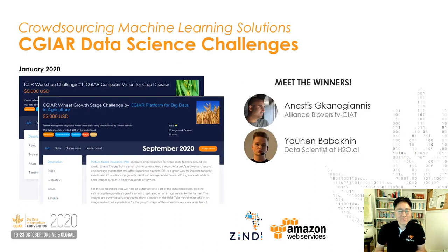One of the new areas we explored this year was the use of an open data science competition platform. In partnership with ZMD and Amazon Web Services, we launched two machine learning challenges: one for identifying crop disease from pictures, and the second on the identification of crop phenology from smartphone pictures.